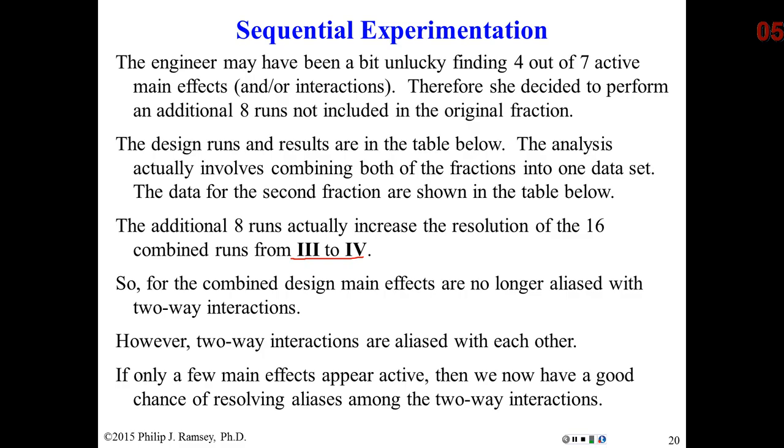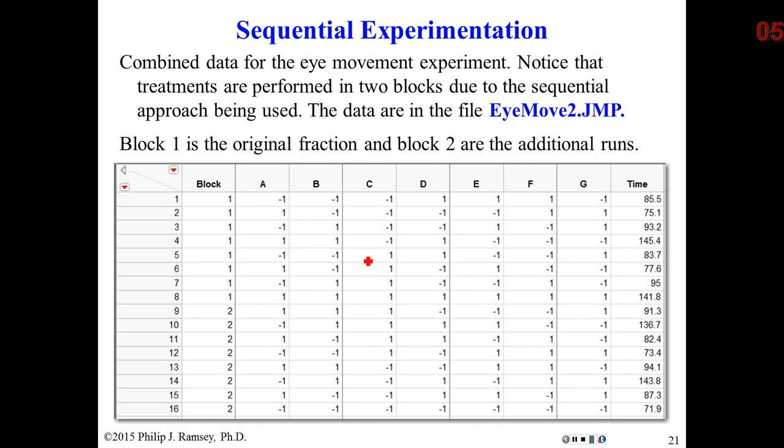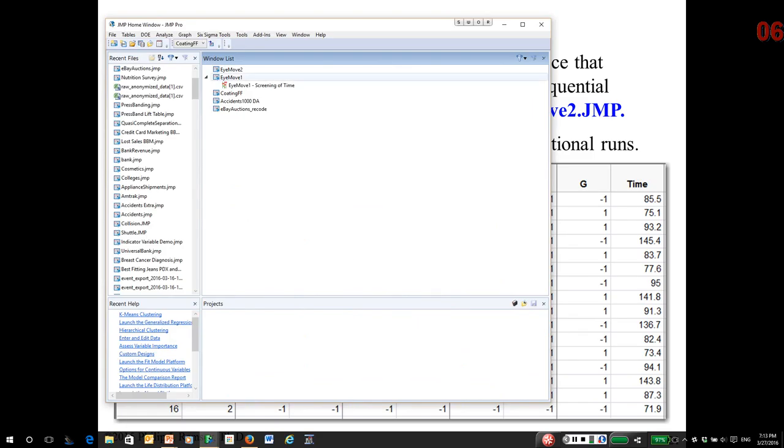Well, it turns out if I add eight additional runs, I can actually accomplish the task of moving from resolution three to four. If I pick the right eight runs. So, the data set, EyeMovement2, has the two sets of runs. Notice, they've been put in separate blocks. They were done at separate points in time. And what we're going to do is actually take a look at this design.